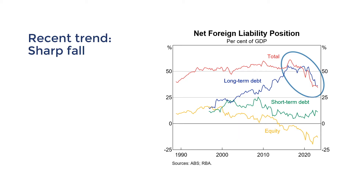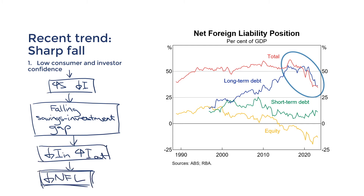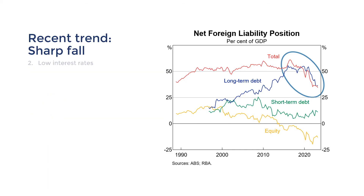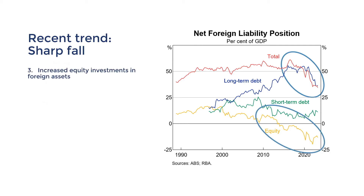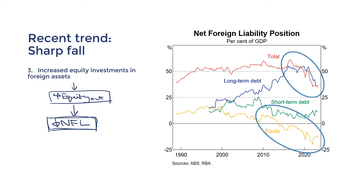Three factors have contributed to the recent decline. First, even before the COVID recession, consumer and investor confidence was low, and COVID exacerbated this, causing Australia's savings levels to increase and even exceed investment — resulting in less overseas borrowing and more overseas investment. Second, low interest rates in Australia have made lending and investing here less attractive to foreign investors. Third, Australians are investing more in foreign equity — net foreign equity has actually been negative lately, meaning we're investing in equity more than we're receiving. A depreciating Australian dollar also helps, as assets owned overseas increase in relative value when denominated in Australian dollars — this is called the valuation effect.